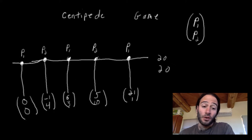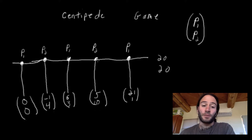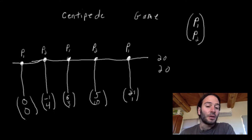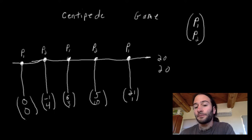If player one chooses to keep going, player two makes a decision to either stop or keep going. If player two chooses to stop, player one gets a payoff of five and player two gets a payoff of ten. If player two chooses to keep going, player one gets one final decision. If he chooses to stop, he gets a payoff of 21 and player two gets a payoff of one. If he chooses to keep going, the game ends and they both get a payoff of 20.